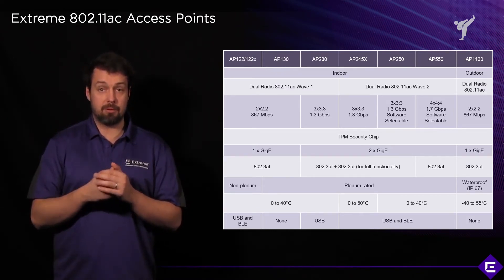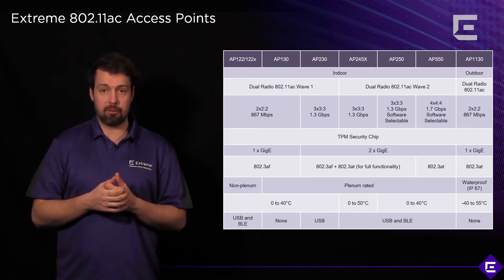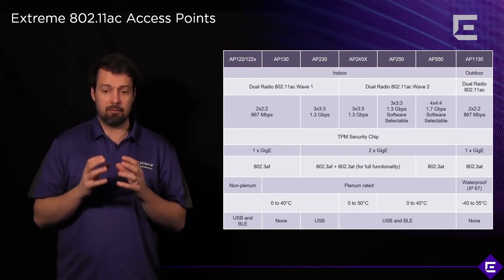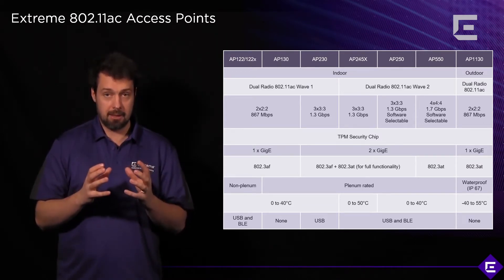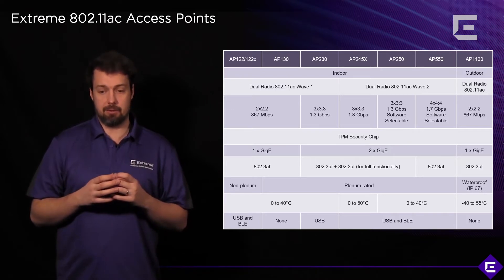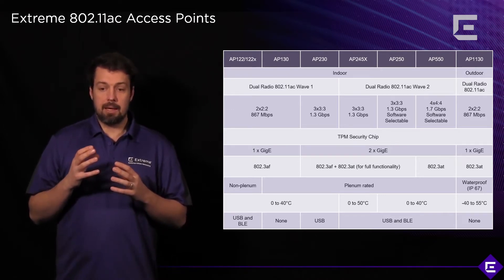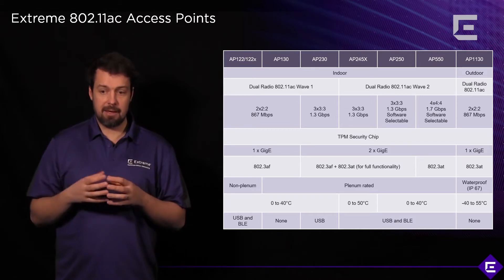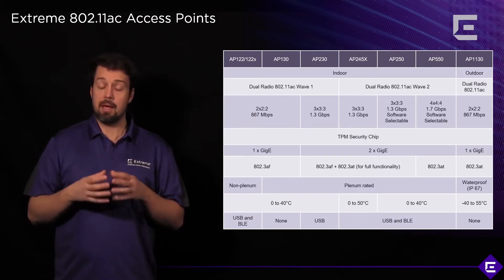All the access points from the AP230 all the way up to the AP550 are going to be suitable for real-time traffic. The AP230 provides a 3x3 radio. The AP245X — X means external antenna connectors.